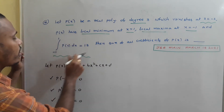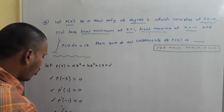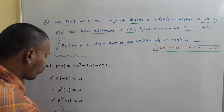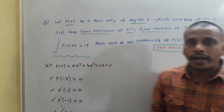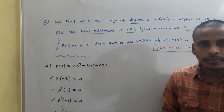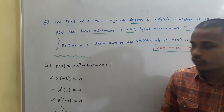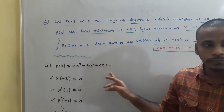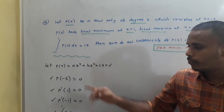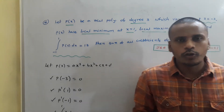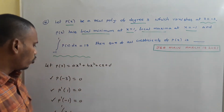The fourth condition is that the integral from -1 to 1 of P(x) dx equals 18. Our target is to find A + B + C + D, so we use these four restrictions one by one to get relations in terms of A, B, C, D and solve them.